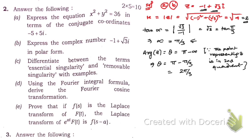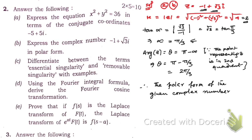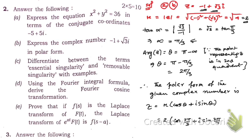Therefore, the polar form of the given complex number is z = r(cos θ + i·sin θ). With r = 2 and θ = 2π/3, the polar form is z = 2(cos(2π/3) + i·sin(2π/3)). This is the answer.